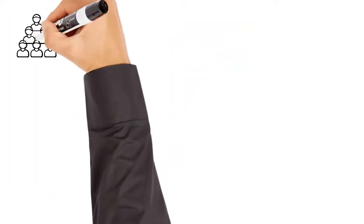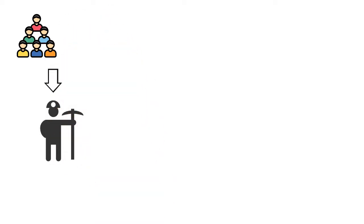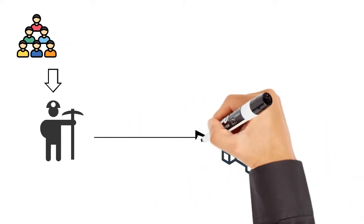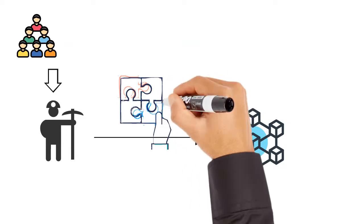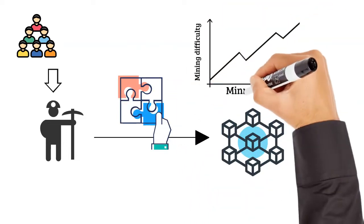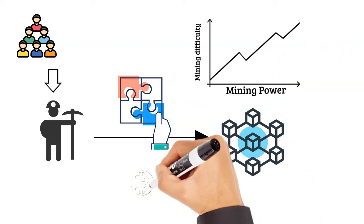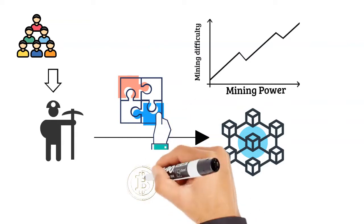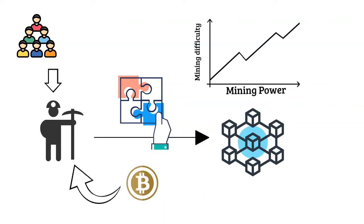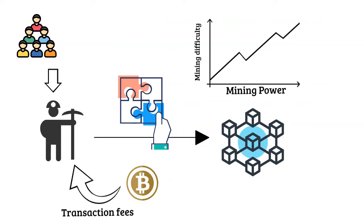As you can imagine, since mining is based on a form of guessing, for each block a different miner will guess the number and be granted the right to update the blockchain. Of course, miners with more computing power will succeed more often, but due to the law of statistical probability, it is highly unlikely that the same miner will do so every time. After this stage is complete, the system generates a fixed amount of bitcoins and rewards them to you as compensation for the time and energy spent solving the math problem.